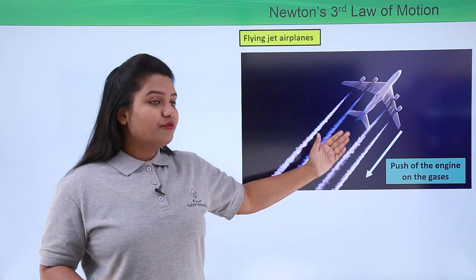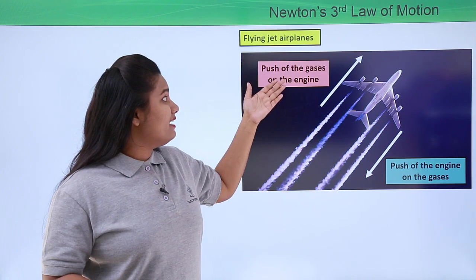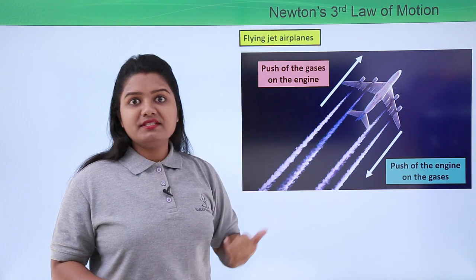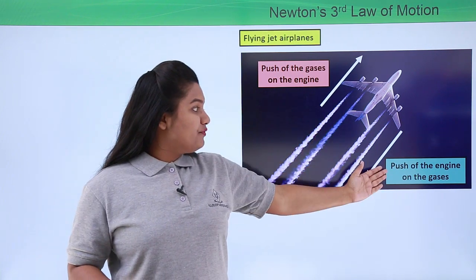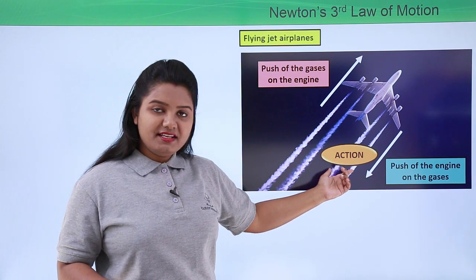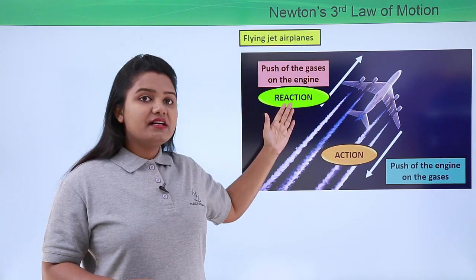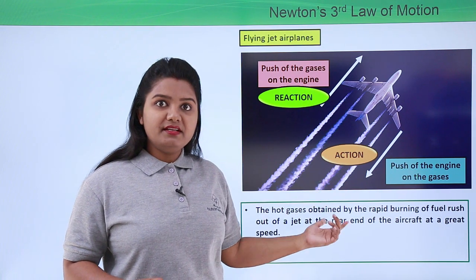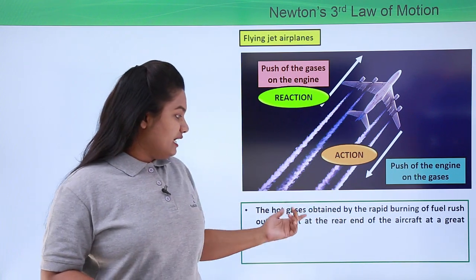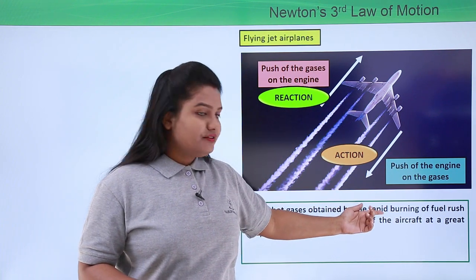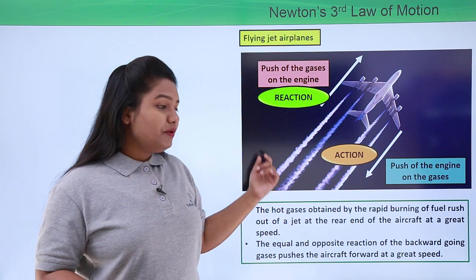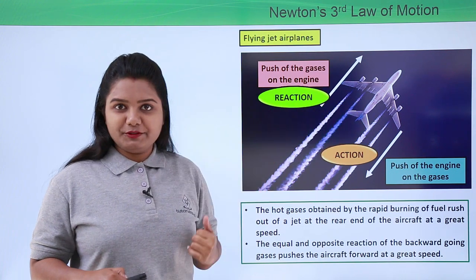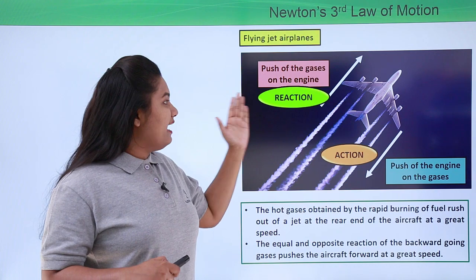As a result of this force on the gases, there is a reaction force that pushes the engine in the forward direction. These two forces are exactly equal but opposite in direction. The hot gases obtained by the rapid burning of the fuel rush out of the jet at the rear end of the aircraft at great speed, and the equal and opposite reaction acts on the airplane, making it move in the forward direction.